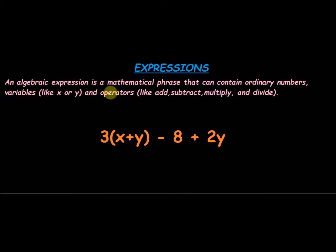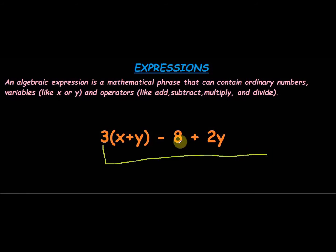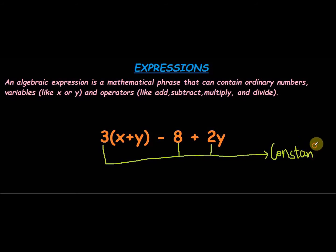To explain the definition further, here is an example. According to this example, the numbers 3, 8 and 2 are all called constants. They are called constants because you know their particular value — the value of 2 won't change, it is always going to remain 2 only. That is why they are called constants.